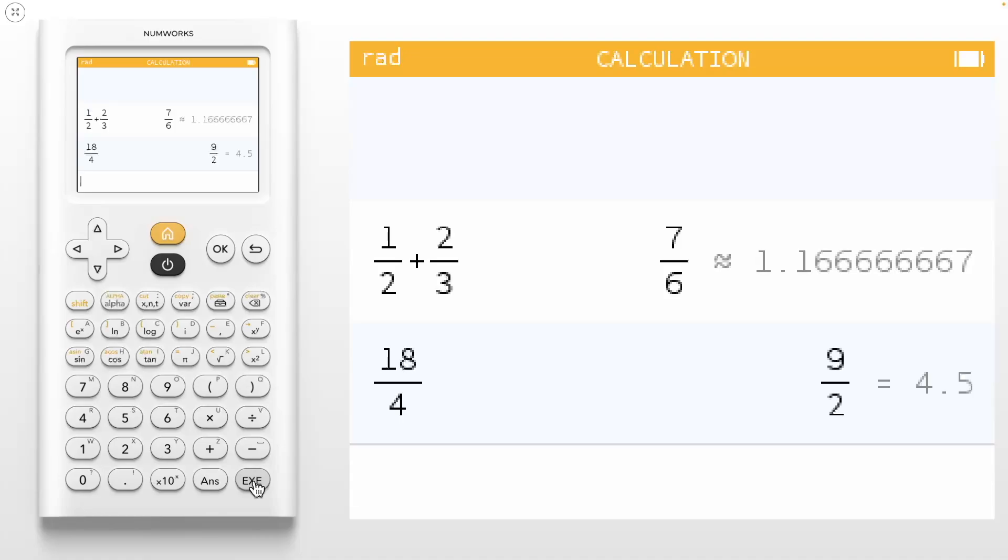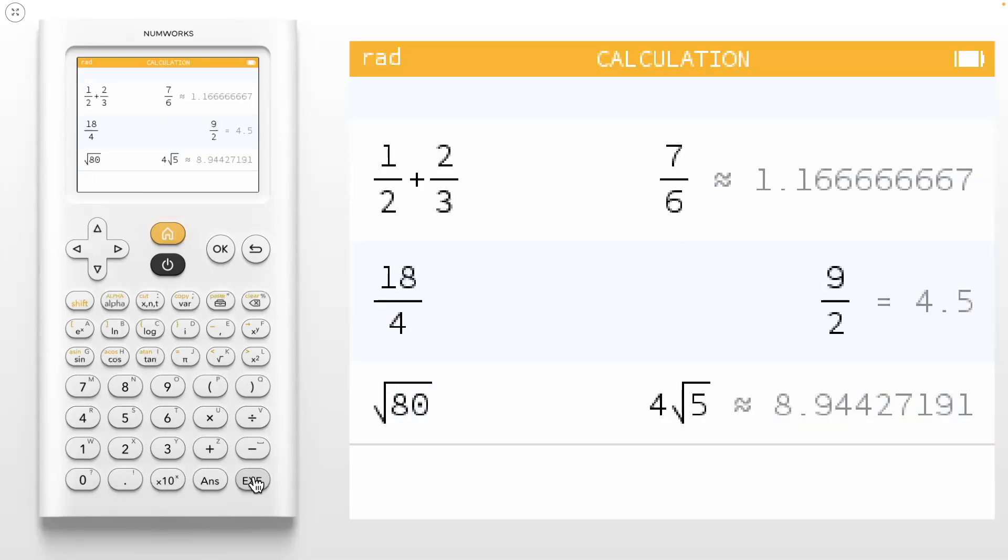You could use a function that's hidden deep in a menu to convert between decimal and fractional form. A better tool would figure out automatically what is likely to be relevant to the user. This idea of pushing information to the user instead of them having to pull it out is a key benefit to using the NumWorks graphing calculator. As another example, let's evaluate the square root of 80.